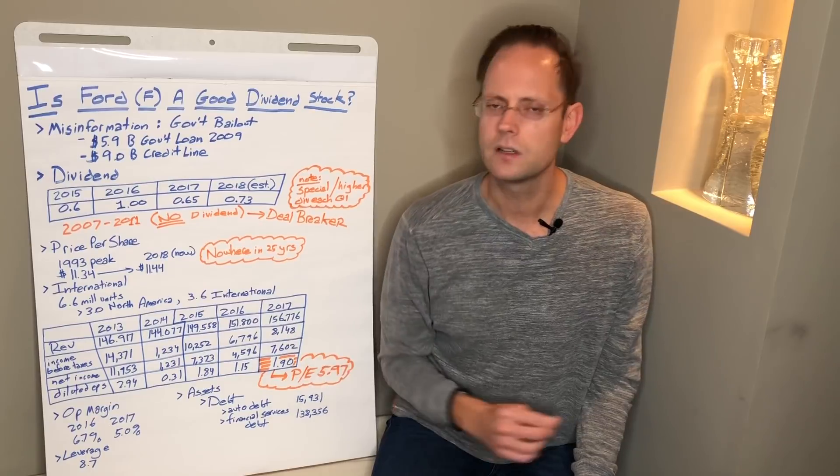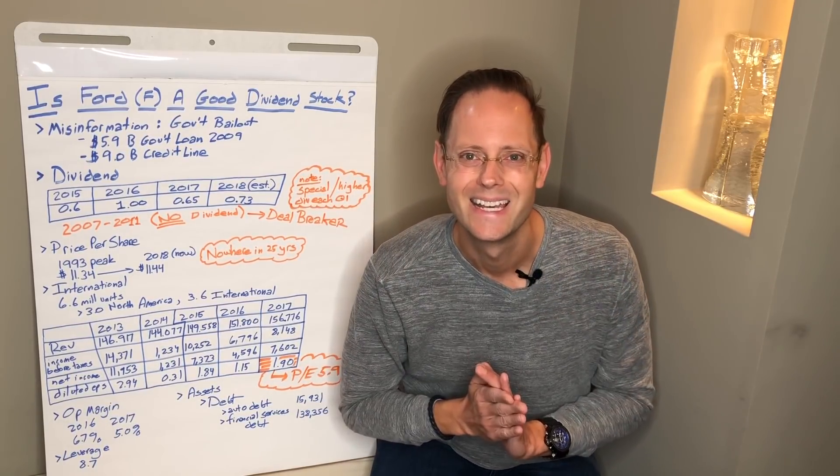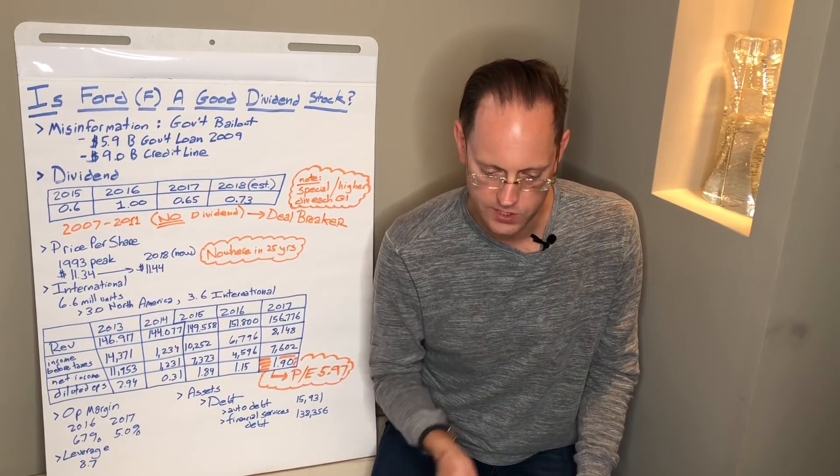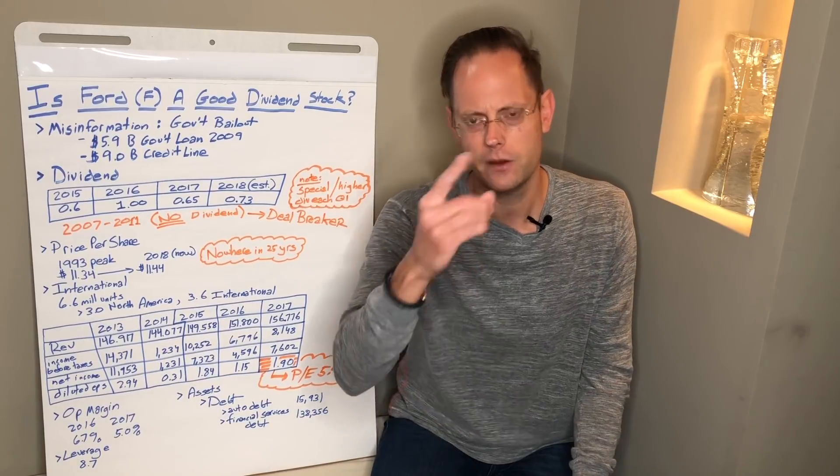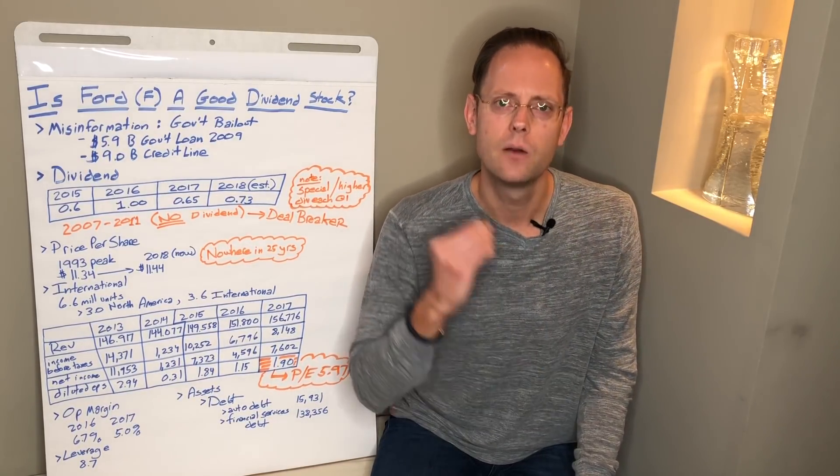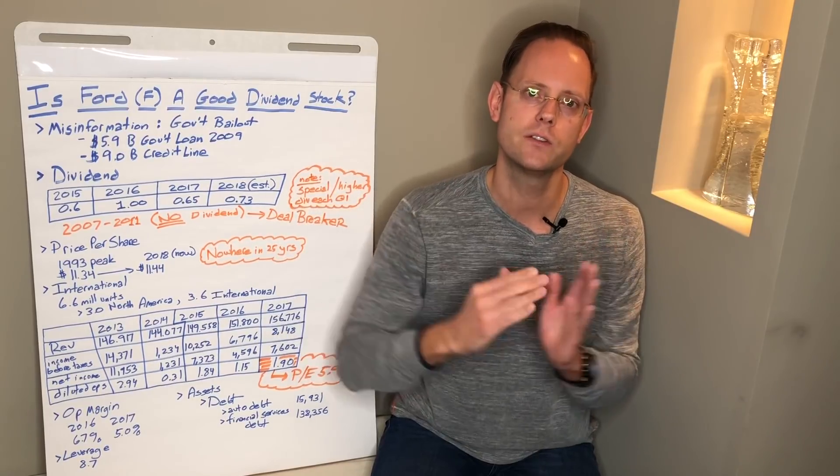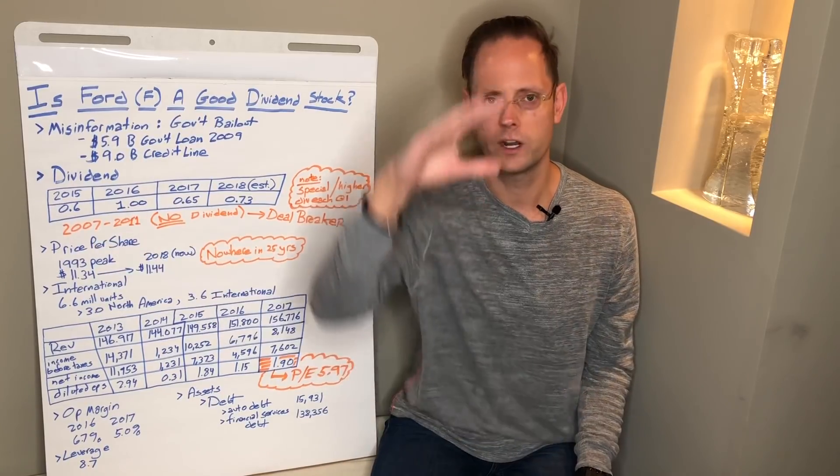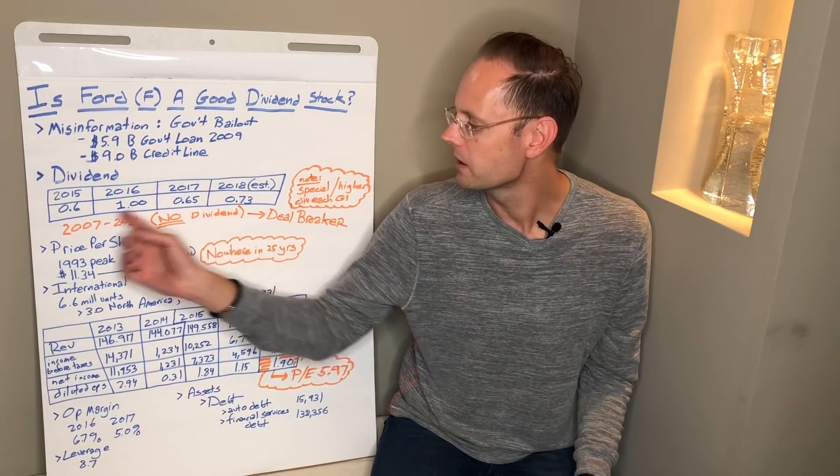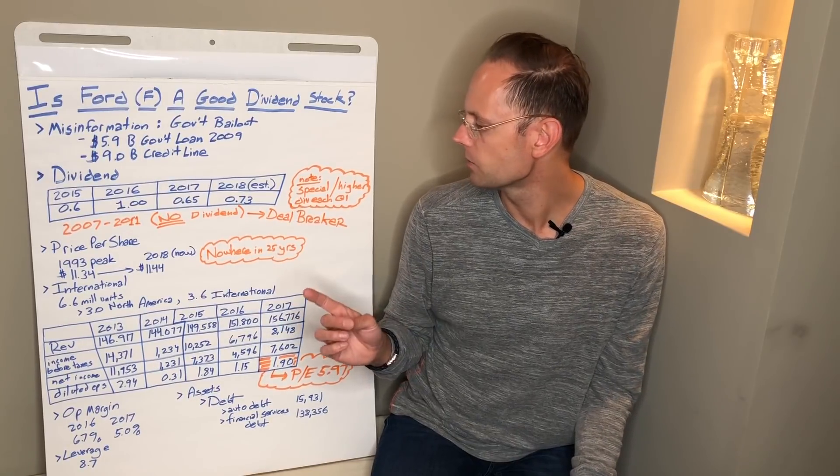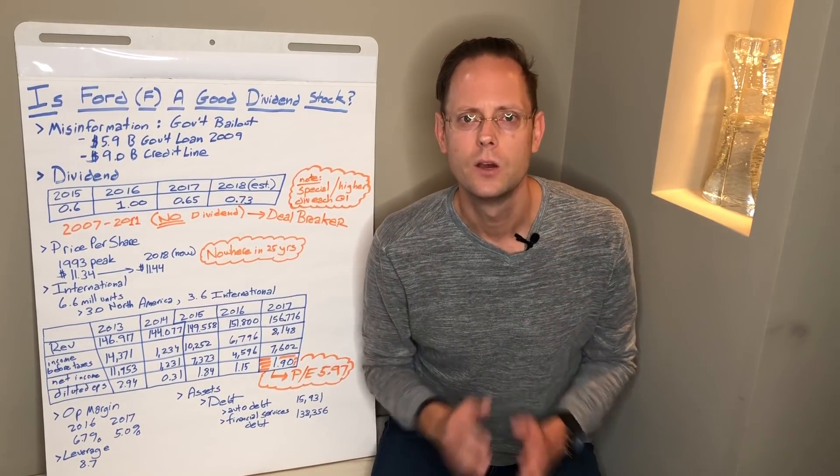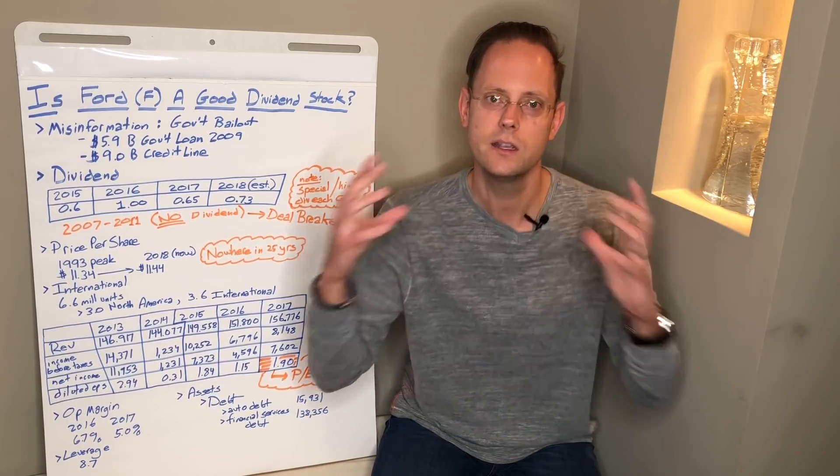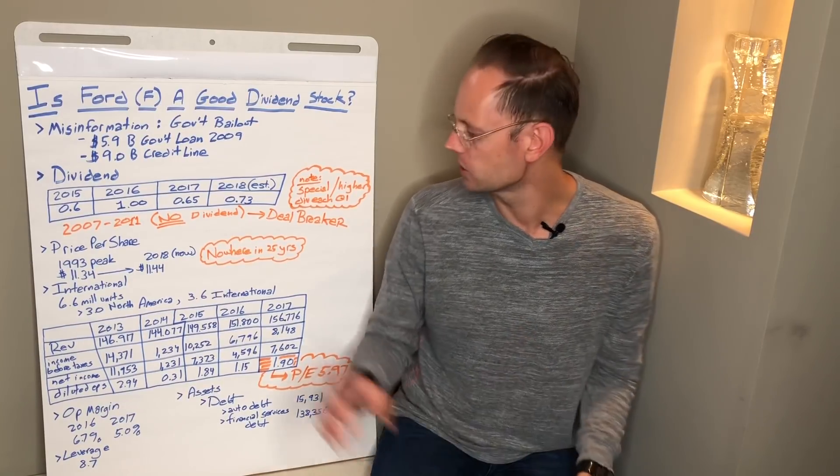2007 through 2011, no dividend. No dividend during these years. During these years of the Great Recession, of the troubles with the auto industry. I went to the Ford website. I went to their investor relations section. I looked at all the historical dividends. When I go to these years, there's nothing for these years, so I'm assuming that there was no dividend during these years, and for me, that's a deal breaker. That's a real issue for me.